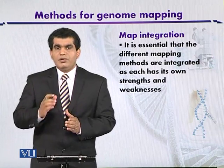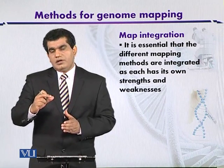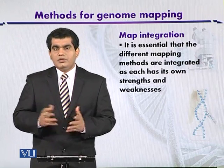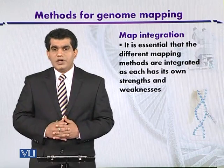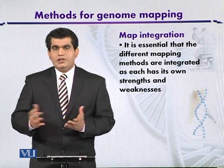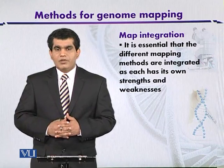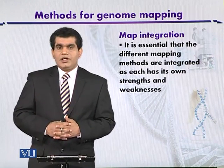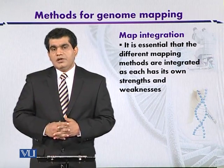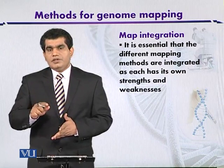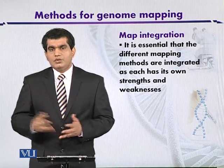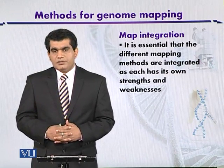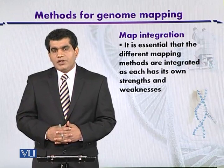For example, one group may report that gene locations are A, B, C, D, while another reports them as A, B, E, D — so there can be slight variations between results from different techniques or groups.